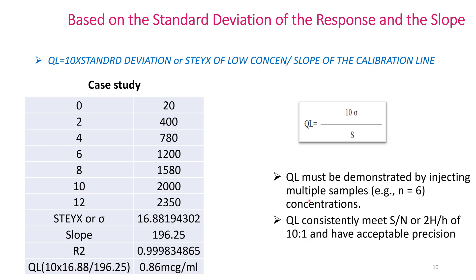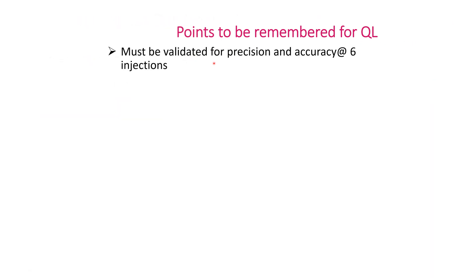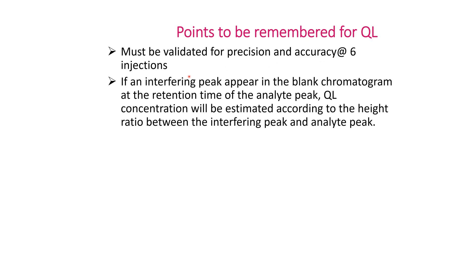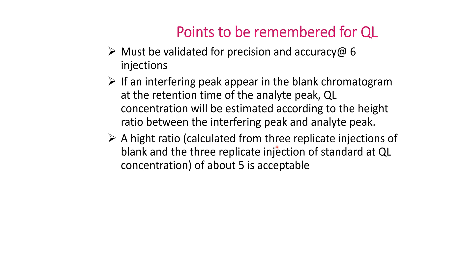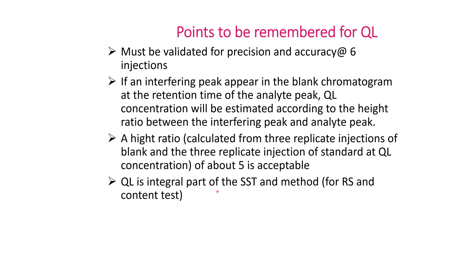QL must be demonstrated by injecting multiple samples — at least 6 injections. QL must consistently meet S/N ≥ 10:1 and have acceptable precision and accuracy. Key points: QL must be validated for precision and accuracy using 6 injections. If an interfering peak appears in the blank chromatogram at the retention time of the analyte peak, QL concentration will be estimated according to the height ratio between the interfering peak and analyte peak. A height ratio calculated from three replicate injections of blank and three replicate injections at QL concentration of about 5:1 is acceptable. QL is an integral part of system suitability and method for related substances and content tests.